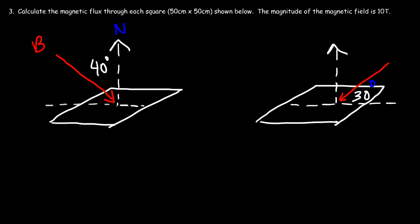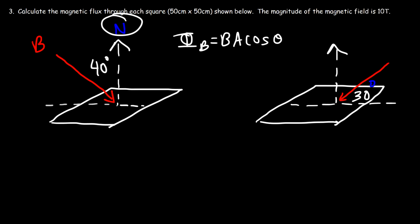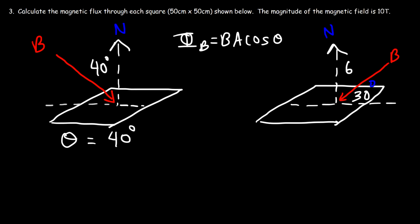Now for problem three, our goal is to calculate the magnetic flux through each square, so you need to know which angle to use. The magnetic flux equals B times A times cosine of θ, where θ is between the normal line and the magnetic field. For the first square on the left, θ is 40 degrees. For the square on the right, the normal line and magnetic field give θ as complementary to 30°, so θ is 90 minus 30, which is 60 degrees. Make sure you choose the right angle.